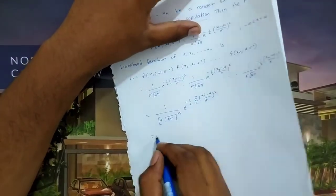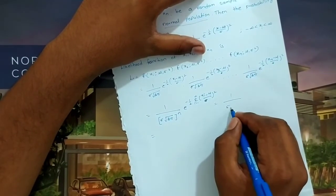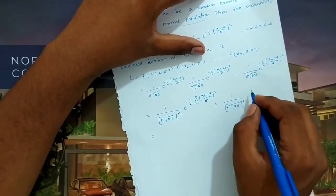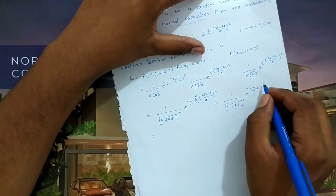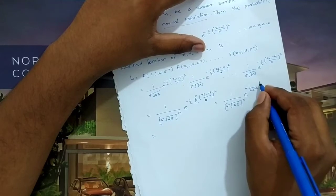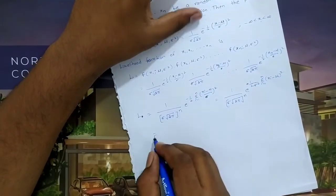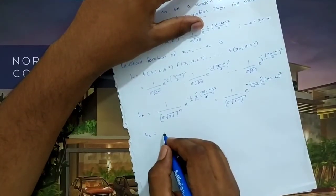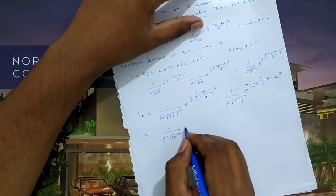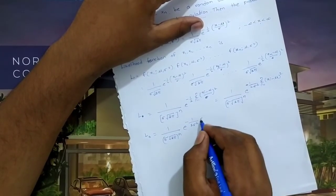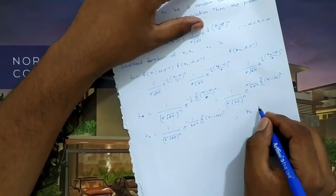So this gives us the likelihood function L. The likelihood function under the null hypothesis H0 (μ = μ0) is: L0 = (1/σ√(2π))^n × e^(−(1/2σ²) × Σi=1 to n (xi − μ0)²). This is L under H0, μ = μ0.